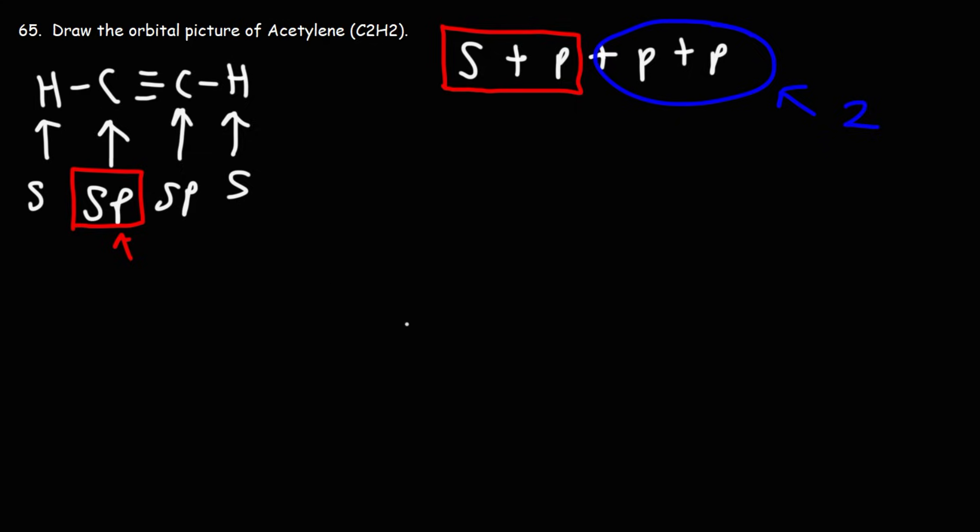Now let's draw a picture, the orbital picture of acetylene. So here we have the carbon, here we have our sp hybrid orbital, and here is hydrogen.